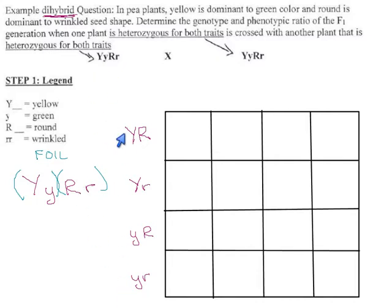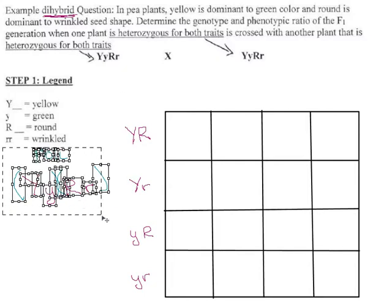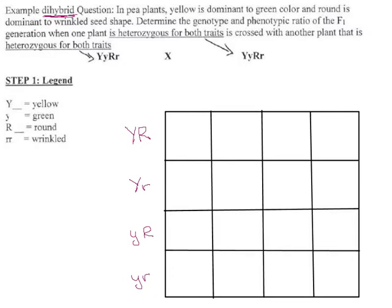So this is all the egg cells that could come from mom. Mom can pass on any combination like this of her Y and R alleles. And because dad is genetically identical, these sperm cells are going to look the exact same way. Dad can also pass on big Y, big R, big Y little r, little y big R, or little y little r.